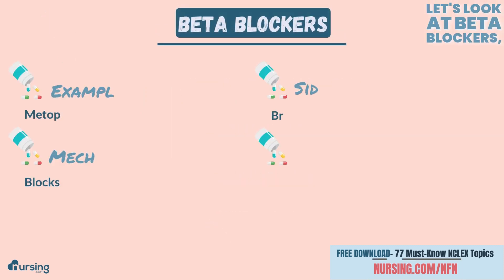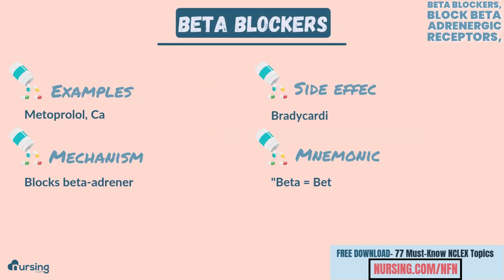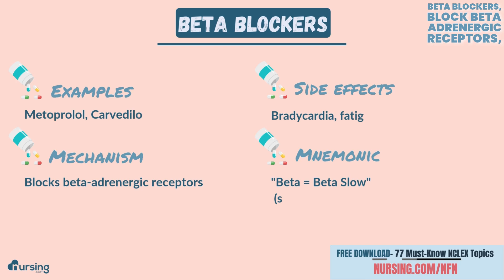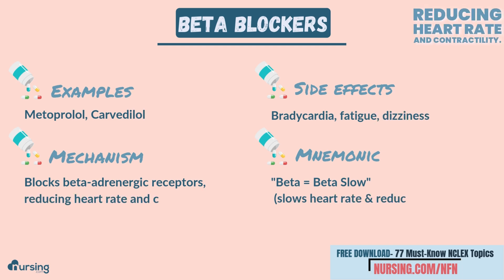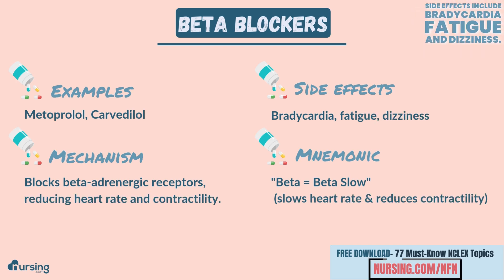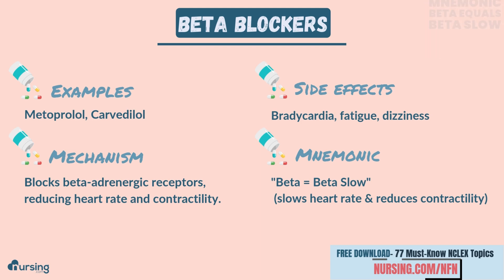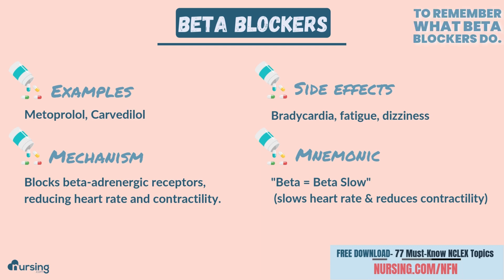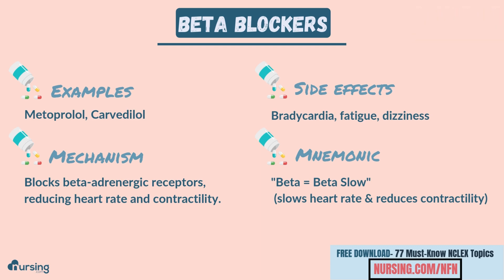Let's look at beta blockers. Beta blockers block beta adrenergic receptors, reducing heart rate and contractility. Side effects include bradycardia, fatigue, and dizziness. You can use the mnemonic 'beta equals beta slow' to remember what beta blockers do.